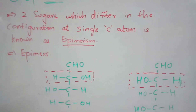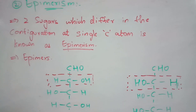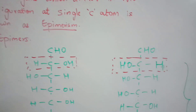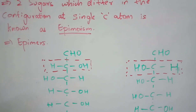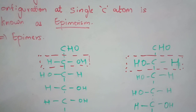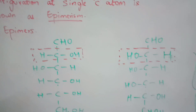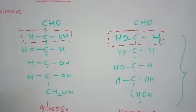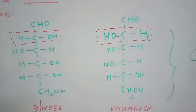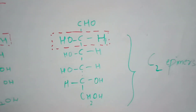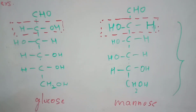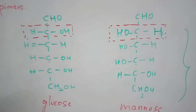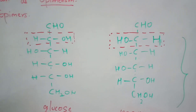Since glucose and mannose differ in configuration at the second carbon atom, they are known as C2 epimers. The configuration change at carbon 2 gives them that name. This is about epimerism. In the next video I will explain anomerism.